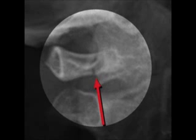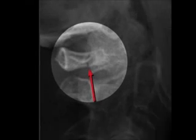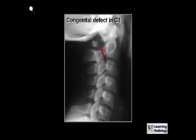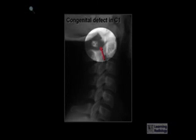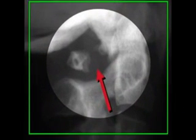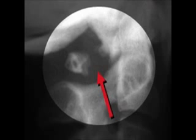This, on the other hand, is a congenital defect in the neural arch of C1. You can see that the lucency is surrounded on either side by a sclerotic and somewhat smooth edge.